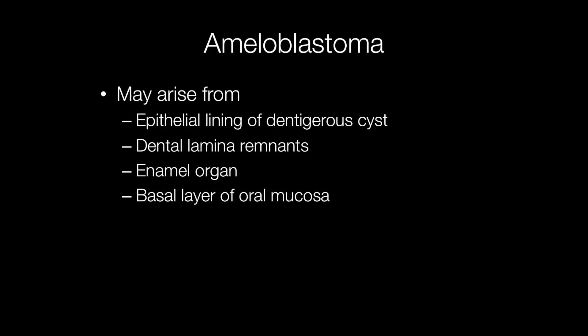Ameloblastomas can arise from the epithelial lining of dentigerous cysts, from dental lamina remnants, from the enamel organ, and they may also arise from the basal layer of the oral mucosa.